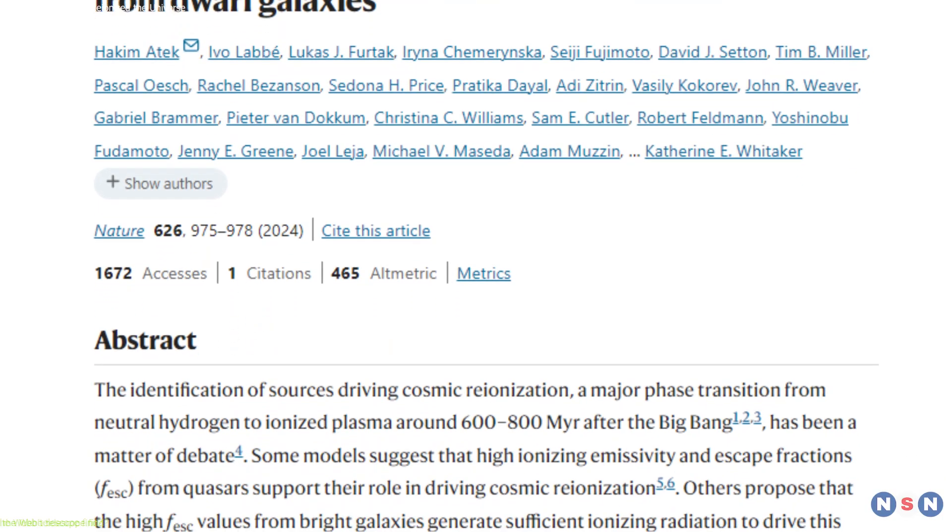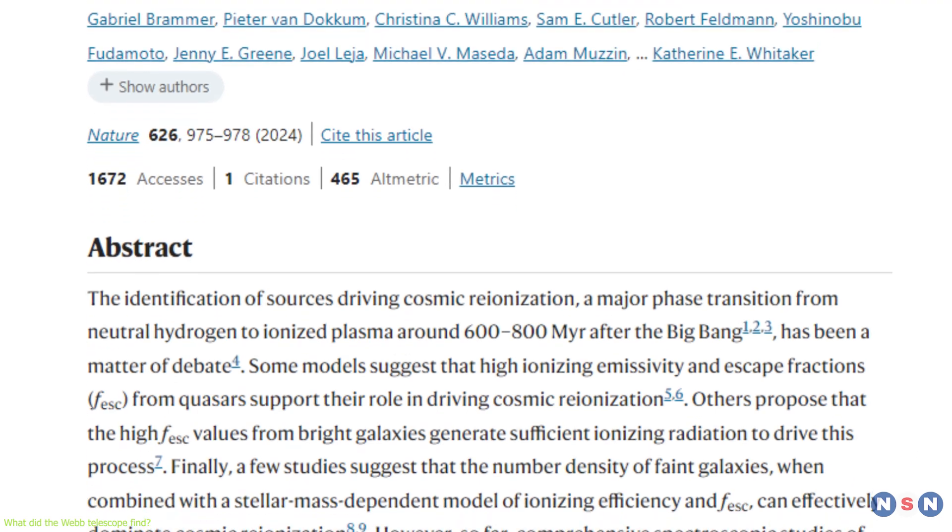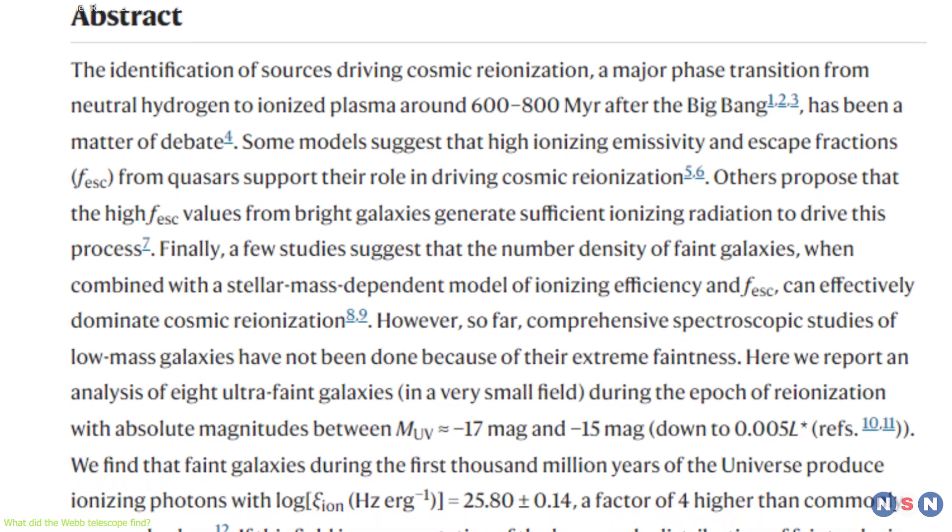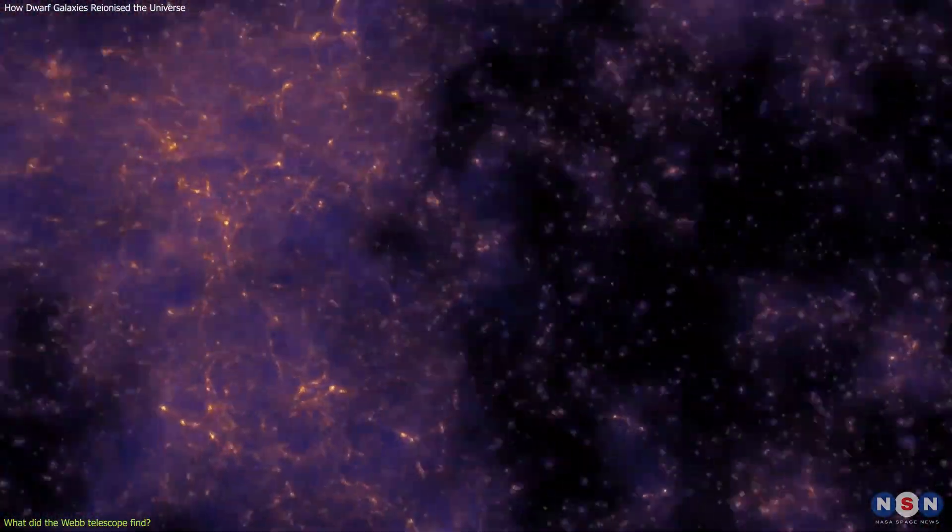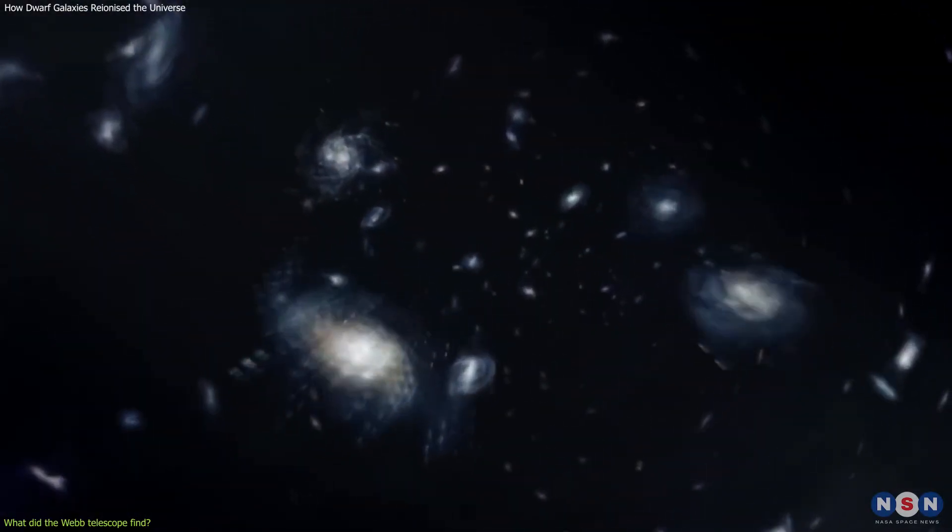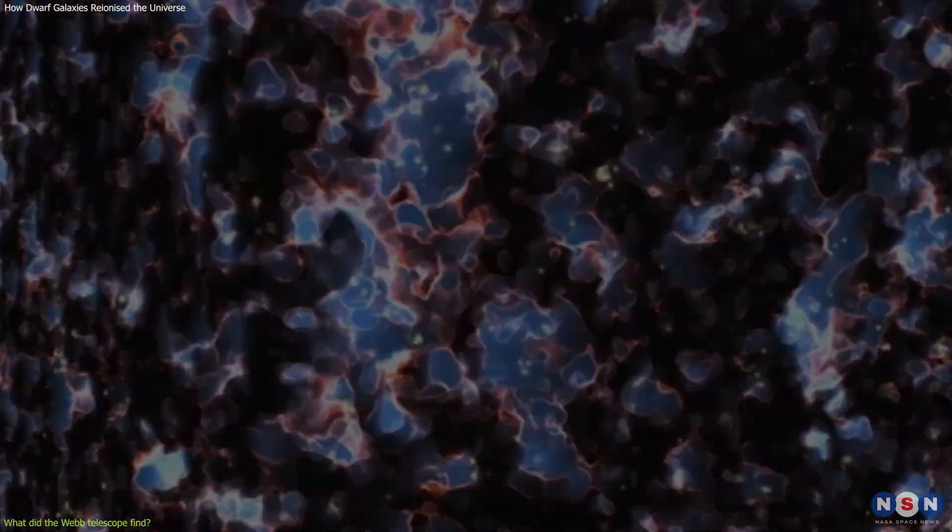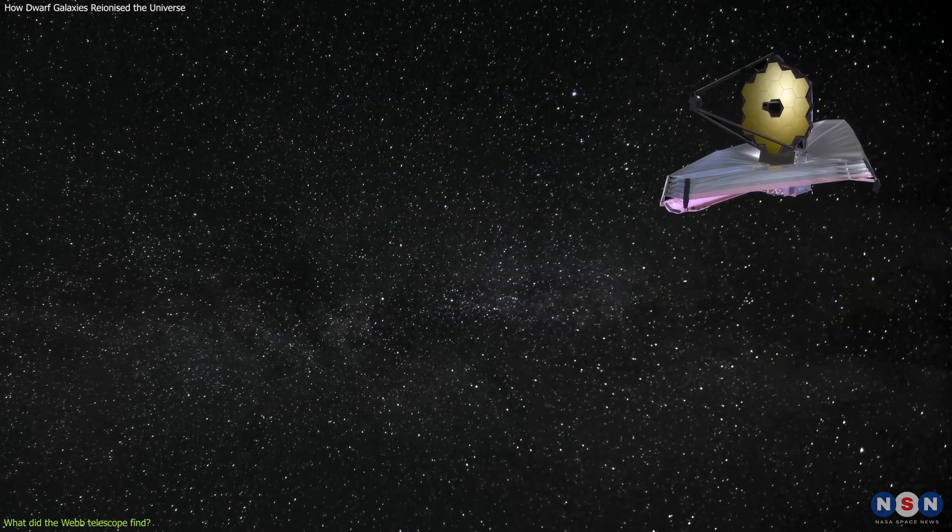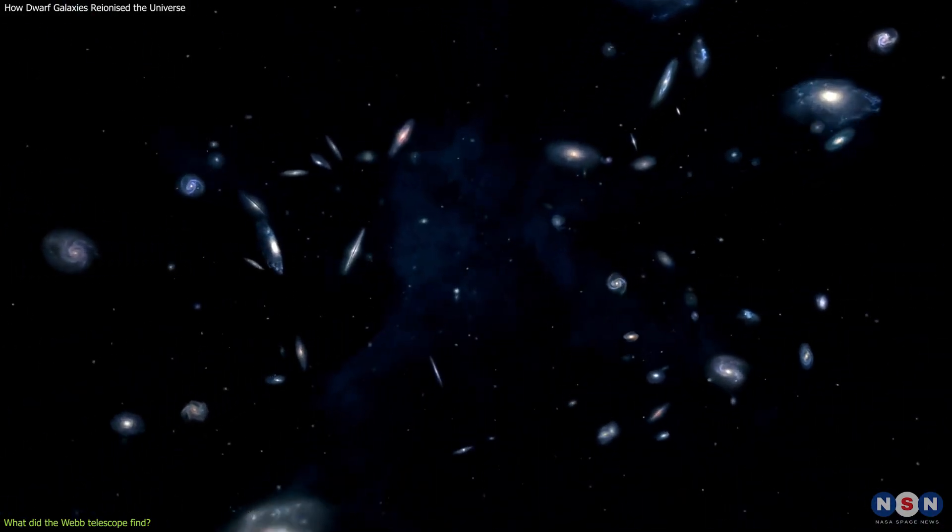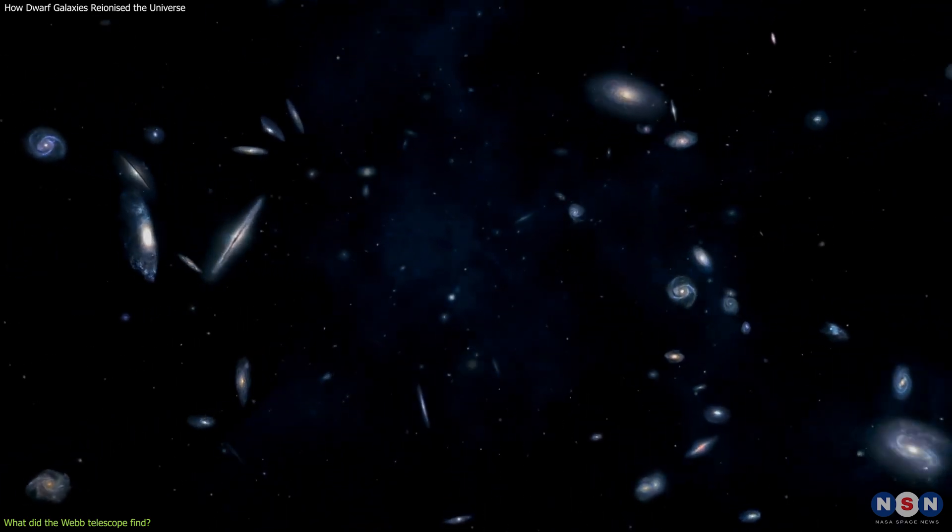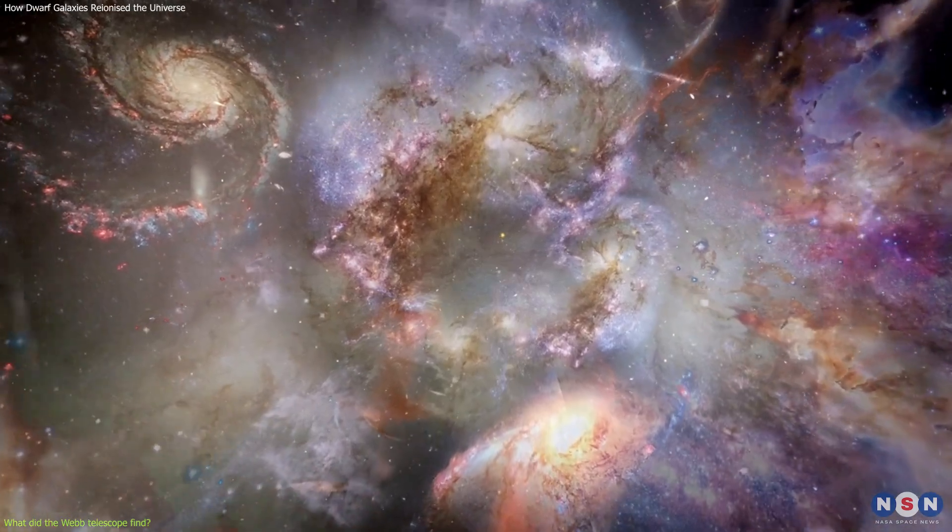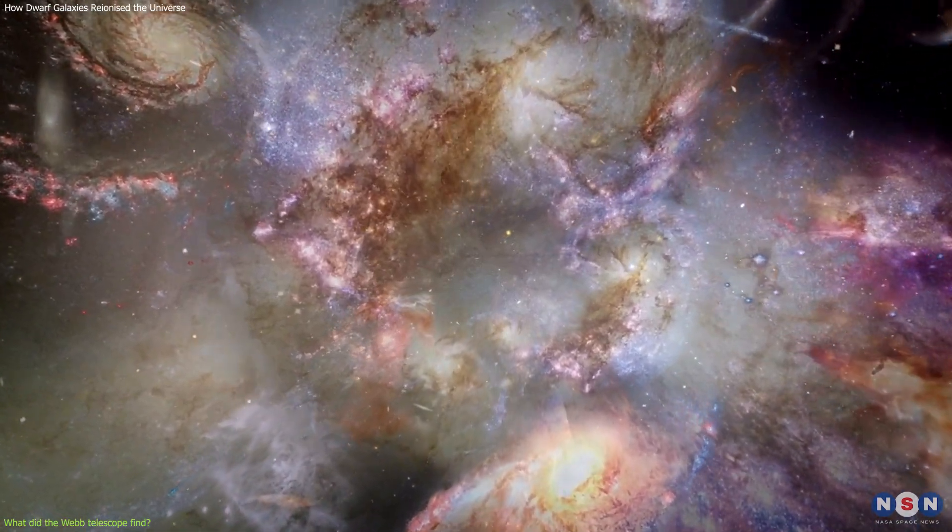Webb found out that the faint galaxies are immense producers of ultraviolet light, at levels that are four times larger than what was previously assumed. This means that most of the photons that reionize the universe likely came from these faint galaxies, which were the most abundant galaxy type during the reionization epoch. Webb also found out that the escape fraction of these galaxies is very high, ranging from 20 percent to 80 percent, depending on their mass and age. This means that these galaxies are very efficient at ionizing the universe, as they lose very little of their ultraviolet light to their internal dust and gas.